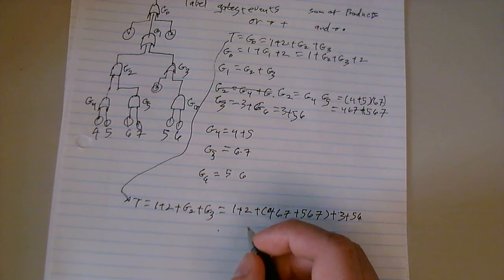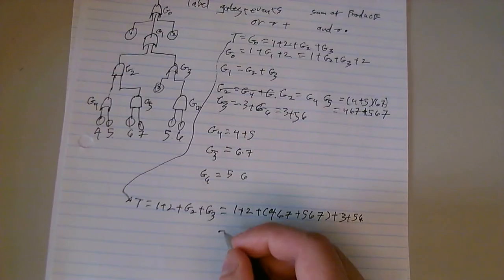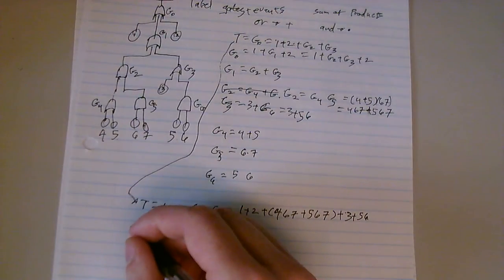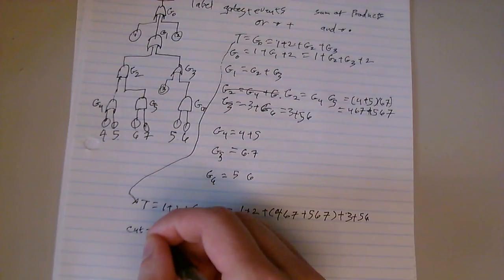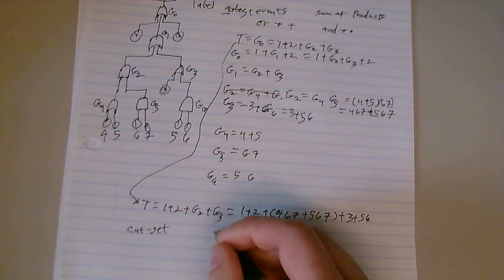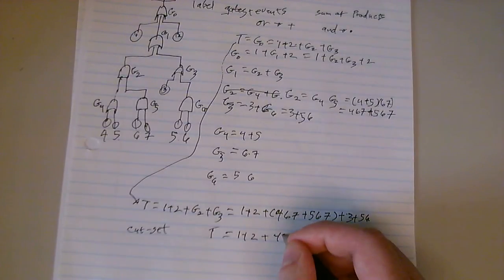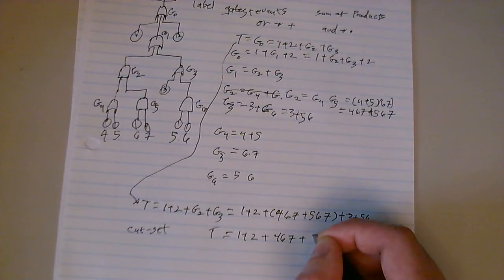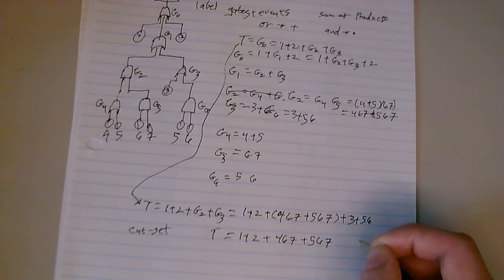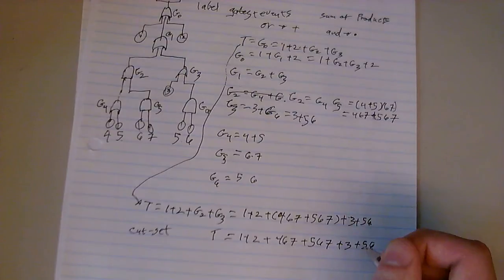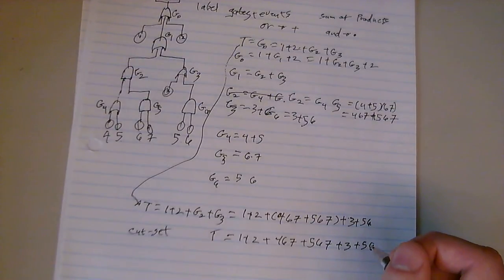So, we now have no longer gates in there, so our final cut set is going to equal 1 plus 2 plus 4, 6, 7 plus 5, 6, 7 plus 3 plus 5, 6, 7.